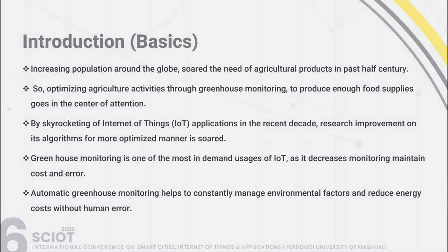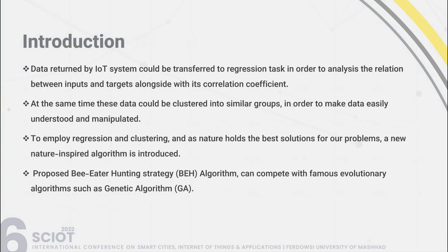Automatic greenhouse monitoring helps to constantly manage environmental factors and reduce energy costs without human error. Data returned by IoT systems could be transferred to regression tasks to analyze the relation between inputs and targets alongside correlation coefficients. This data could also be clustered into similar groups to make data easily understood and manipulated. To employ regression and clustering, a new nature-inspired algorithm is introduced: the proposed bee eater hunting strategy algorithm, or BEHA algorithm, which can compete with famous evolutionary algorithms such as genetic algorithm.